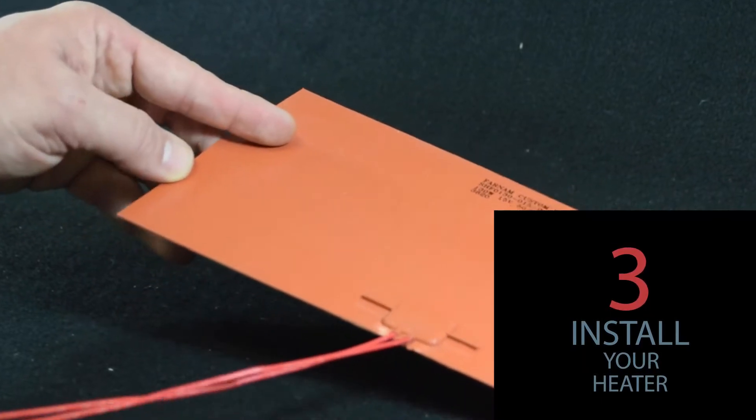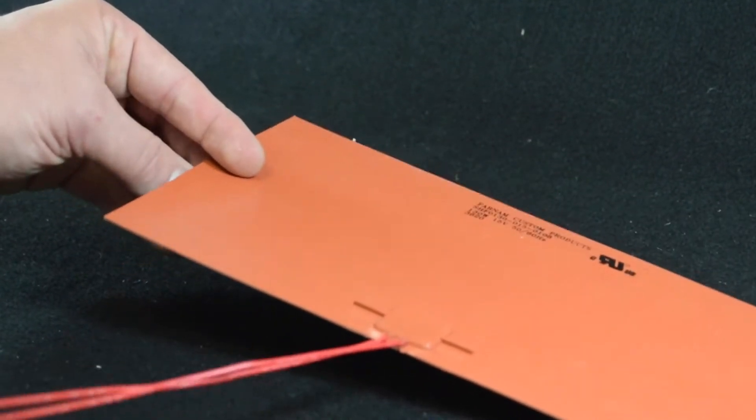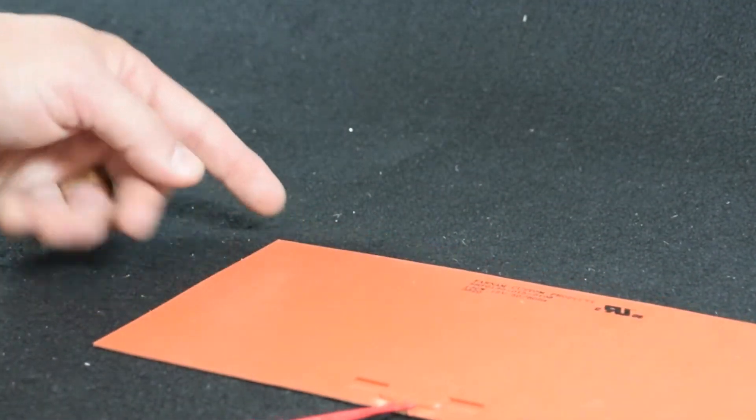Third step, place the heater mat with release liner on the surface tentatively and mark the corner of the heater if necessary.